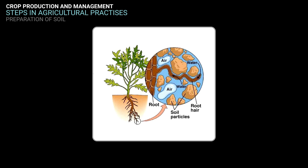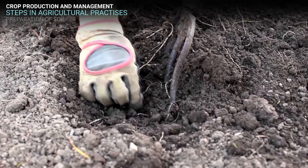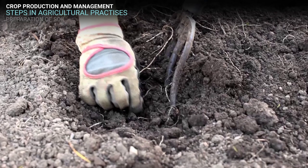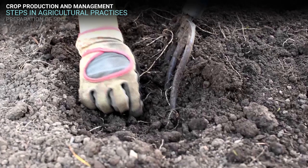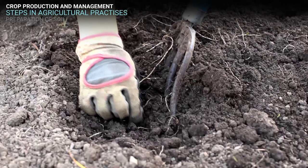Dead plants and animals get decomposed by soil microbes, and various nutrients held in the dead organisms are released back to the soil. These nutrients are again absorbed by the plants. Since only a few centimeters of the top layer of soil support plant growth, turning and loosening of soil brings the nutrient-rich soil to the top layer so that plants can use these nutrients easily. Thus, turning and loosening of the soil is a very important task for cultivation of crops.